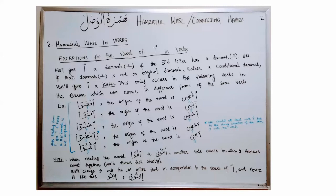This Dhamma on the third letter is not original — it arises because a letter Waw appears at the end of the word, requiring a compatible vowel before it. In the Qur'an, you can never have a letter before a second-letter Waw carry a Kasra — you cannot even recite it that way. Because of letter Waw, Dhaad has Dhamma; because of Waw, Nun has Dhamma; because of Waw, Sheen has Dhamma; because of Waw, Ta has Dhamma. In all these cases, this Dhamma is not original — it comes only because a compatible vowel is needed before the Waw at the end. Originally, these words have Kasra on the third letter, so you start Hamzat al-Wassl with Kasra, not Dhamma.